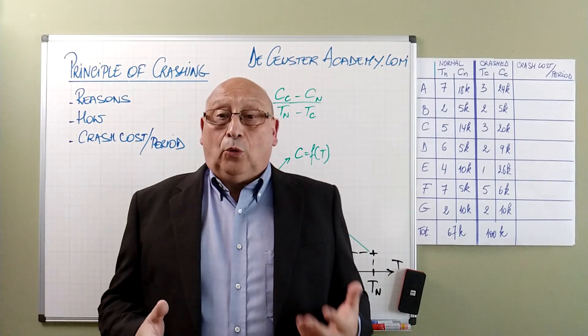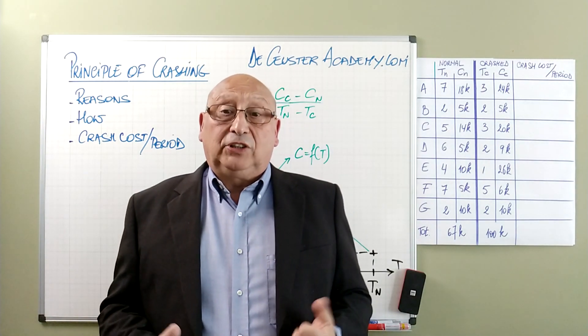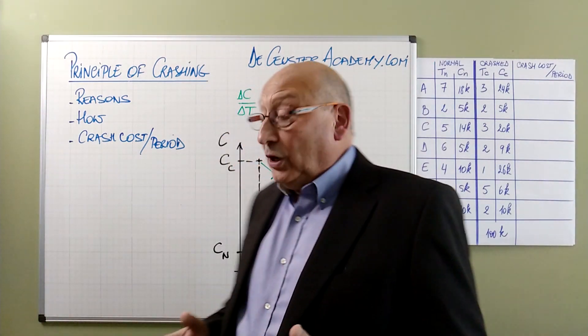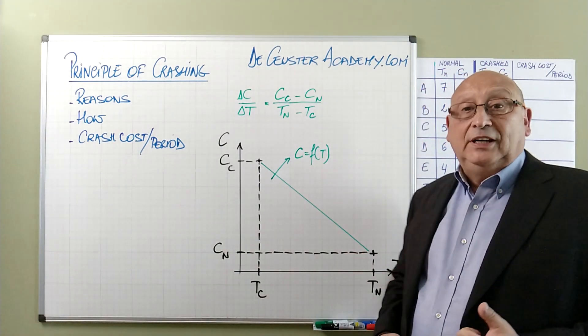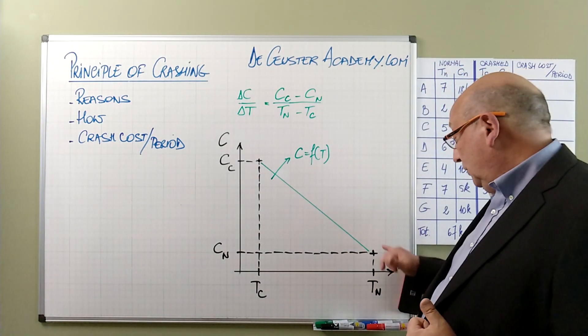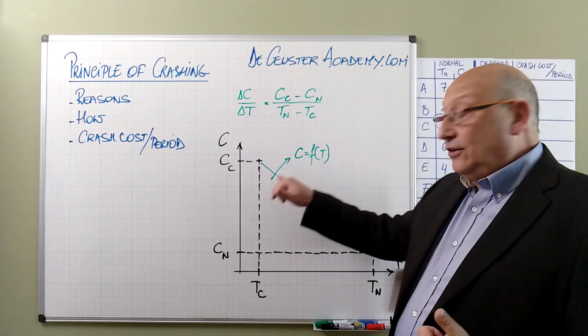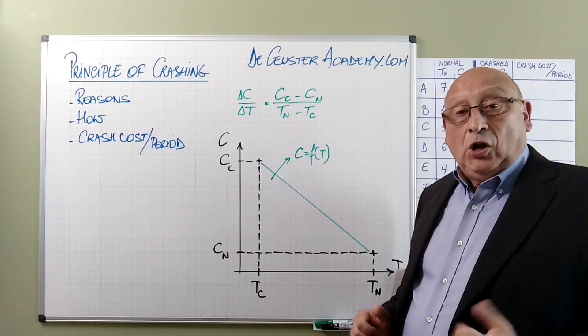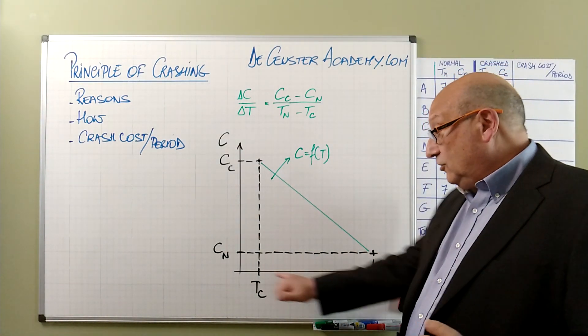We want to find out what is the crash cost per time unit. When we're looking at the crash cost, we make the assumption that the link between duration and cost is linear.